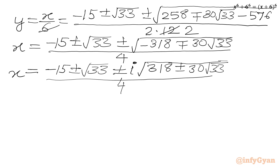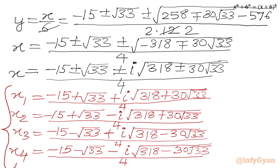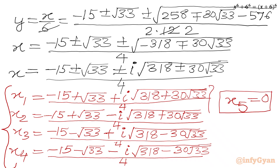Let me write the complex solutions: x1, x2, x3, x4 are all complex solutions, and x5 equal to 0 is the only real solution. So we have 1 real and 4 complex solutions. I hope friends you will like this video. Thank you so very much for watching.